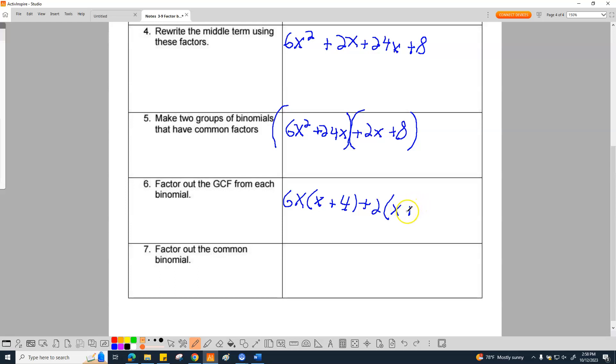We basically did our work. We did it. We have this grouped. And now we have 6x plus 2, that's one group. And then the other group we have is x plus 4. So right here is where I'm pulling out the x plus 4. That's it.